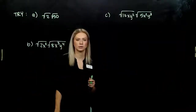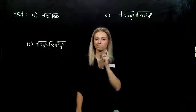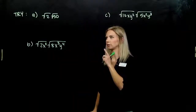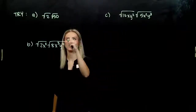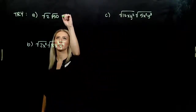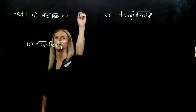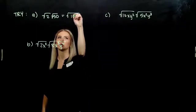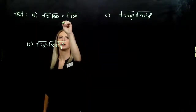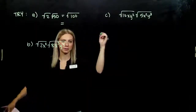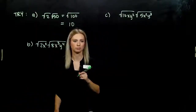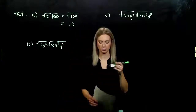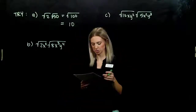Looking at these. The very first: √2 · √50. 2 is not a perfect square and neither is 50, but if we multiply them together we get the square root of 100, which evaluates out to 10. 10 squared gives 100 — straightforward.